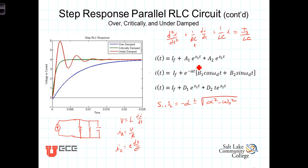All that's left is to determine the final value of the current and the constants A1 and A2, which will be determined from the initial conditions. Similarly, for the underdamped case we need to find I sub F, B1, and B2, and for the critically damped case, I sub F, D1, and D2.